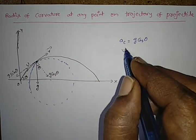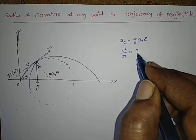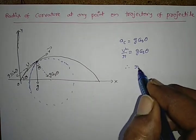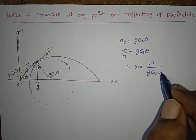We know that expression for centripetal acceleration is v squared by r. So v squared by r equal to g cos theta, therefore r is equal to v squared by g cos theta.